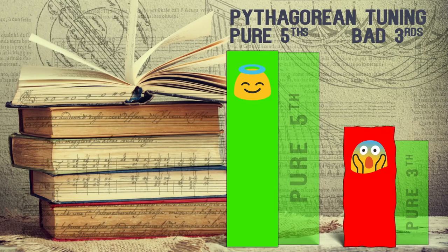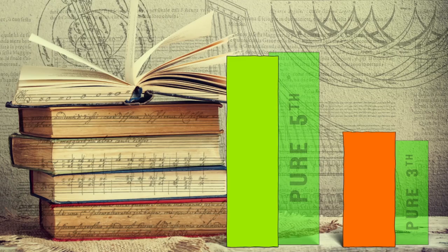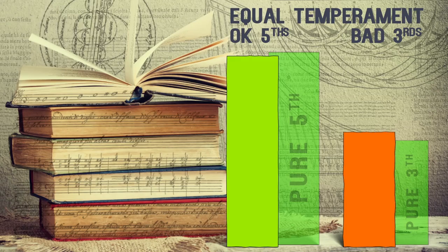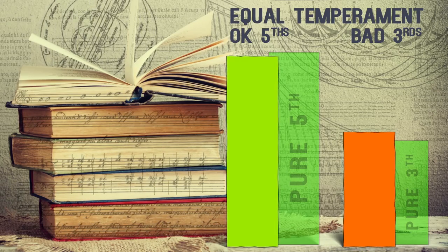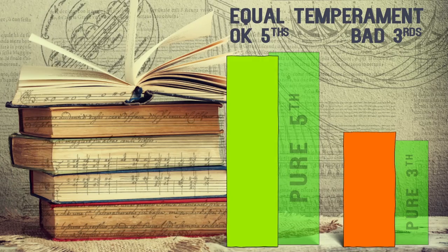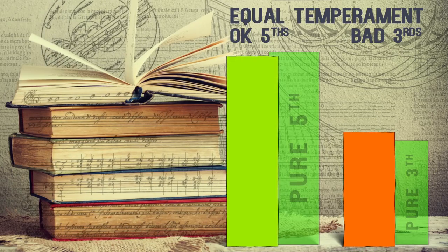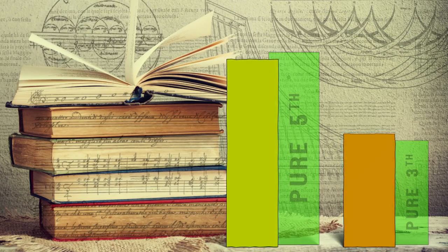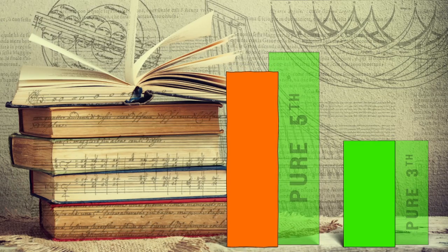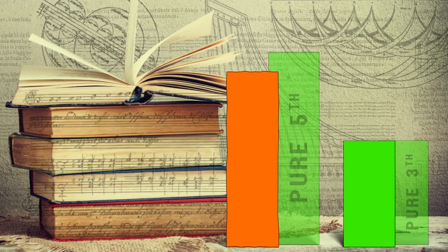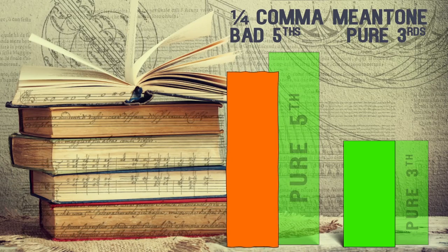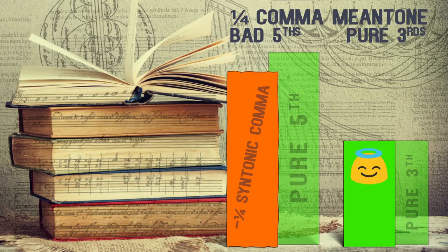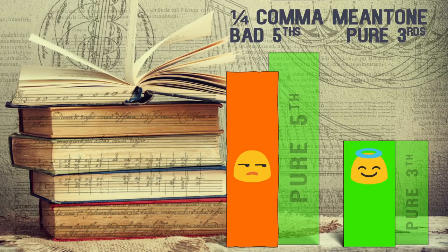Making the fifths smaller will make the thirds smaller, and by that make them closer to pure — better in tune. The nowadays standard equal temperament is quite close to Pythagorean tuning: the fifths are slightly smaller than pure, and so the thirds are slightly better, but still very far from pure. If we want to have nicer thirds, we must diminish the fifths even more. If we diminish them until the thirds are pure, we get to the quarter-comma meantone — that is, each fifth is diminished by a quarter of the syntonic comma. Now the thirds are sweetly pure, but the fifths are not so good anymore.